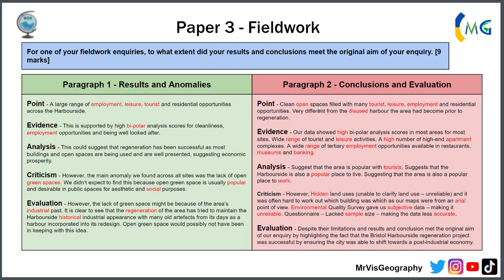For paragraph two — same thing, conclusions. Our conclusion is that we've got clear open spaces filled with tourist, leisure, and employment activities, very different from the disused harbour area that was there before. Data suggests we've got high bipolar analysis scores in most areas, a wide range of tourist and leisure activities, a high number of high-end apartments, and a wide range of tertiary employment including museums and banking. That suggests the area is popular with tourism, a popular place to live, and a popular place to work. However, we've got some hidden land use and areas that are difficult to quantify what they're being used for. Environmental quality survey is subjective, which can make results unreliable, and the questionnaire lacked sample size as there weren't many people there on the day. Despite the limitations, our conclusions did meet our original aim of inquiry — to see whether the Harbourside project was successful — and it is clear that the city of Bristol has been able to shift towards a post-industrial economy. Despite its limitations, our results and conclusions proved the success of the regeneration project.